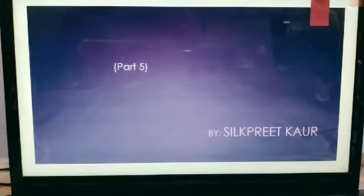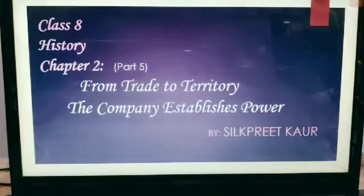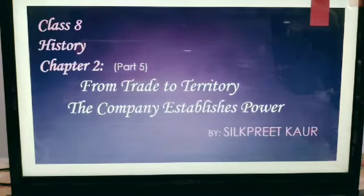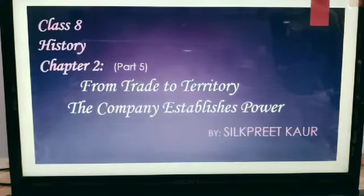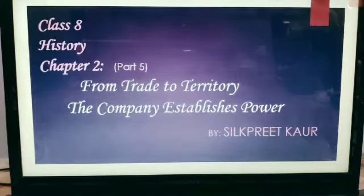Good morning to all my dear students. Today we will complete the chapter 'From Trade to Territory.' In the previous class we studied that after the death of Maharaja Ranjit Singh in 1839, and two prolonged wars with the Sikh kingdoms, Punjab was finally annexed by the British in 1849.